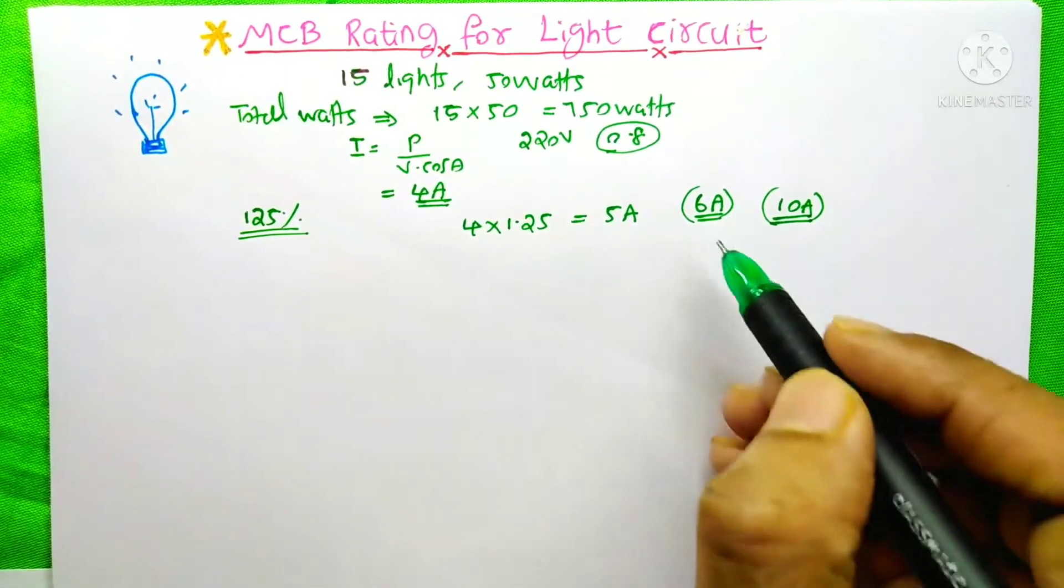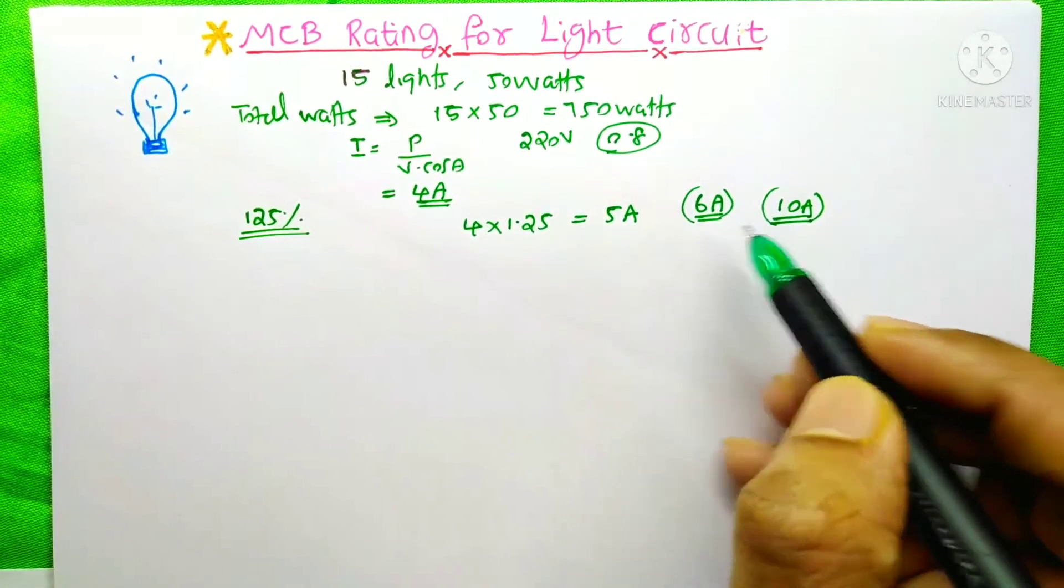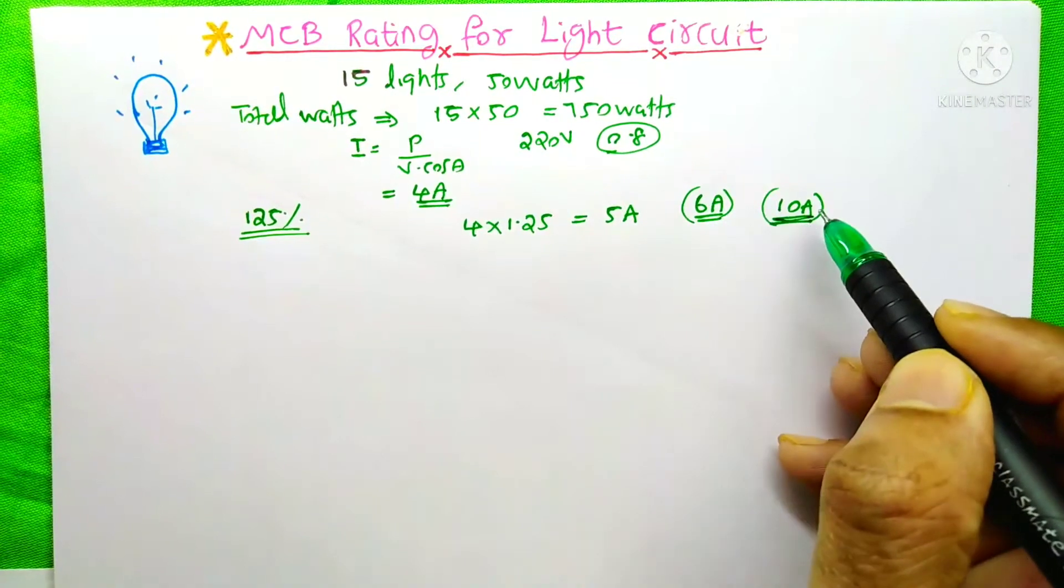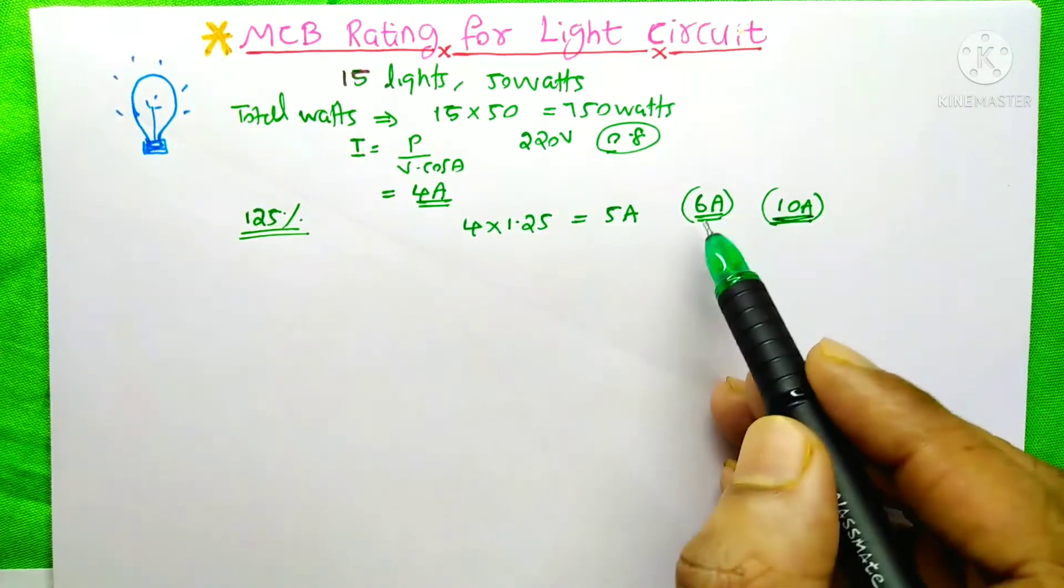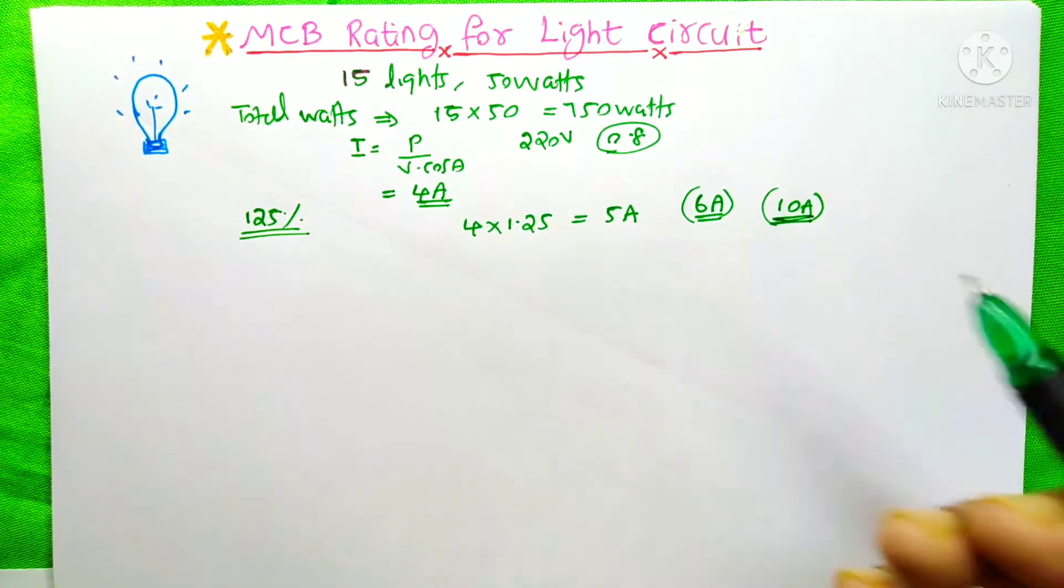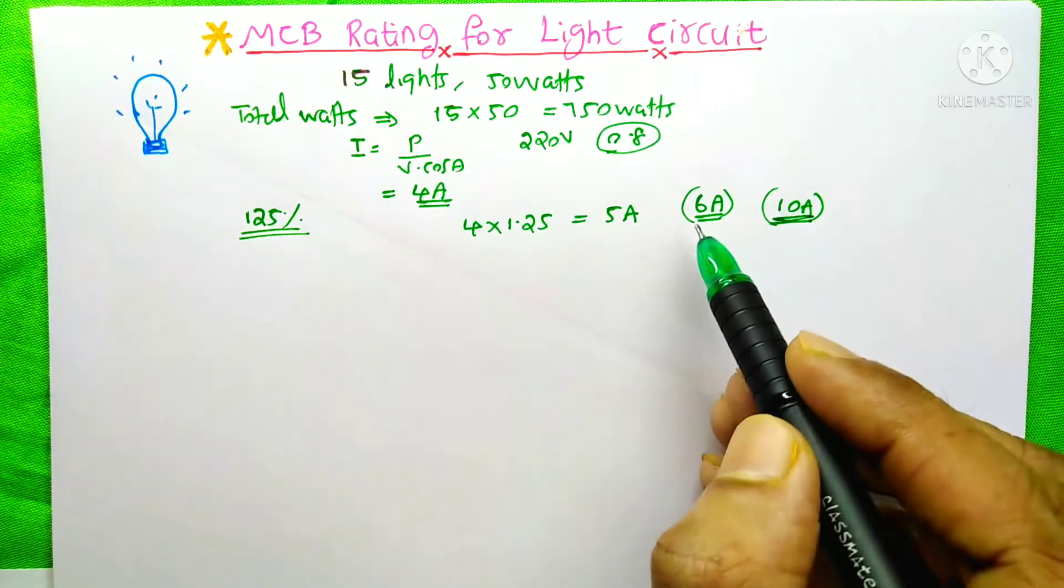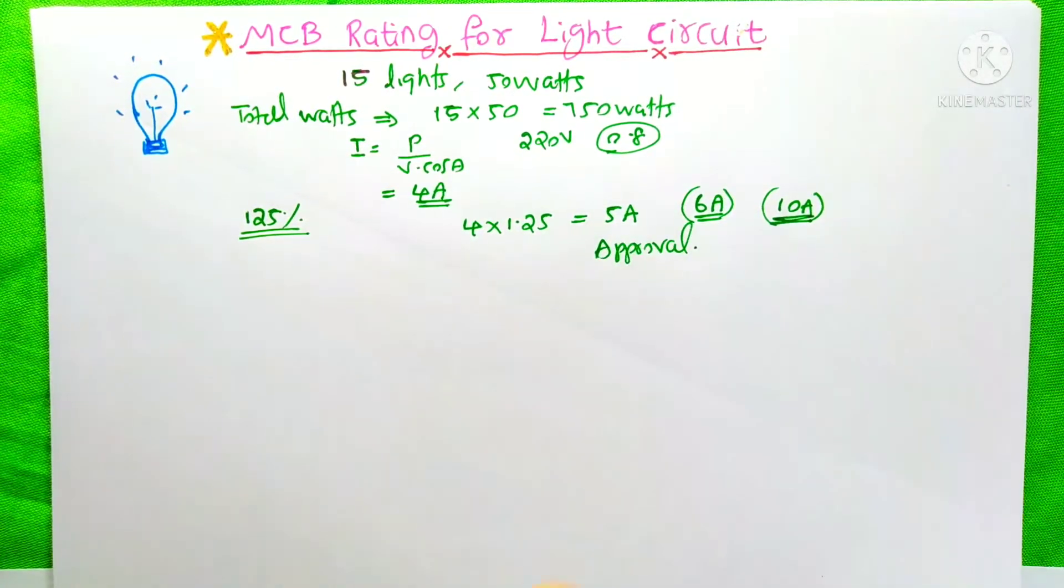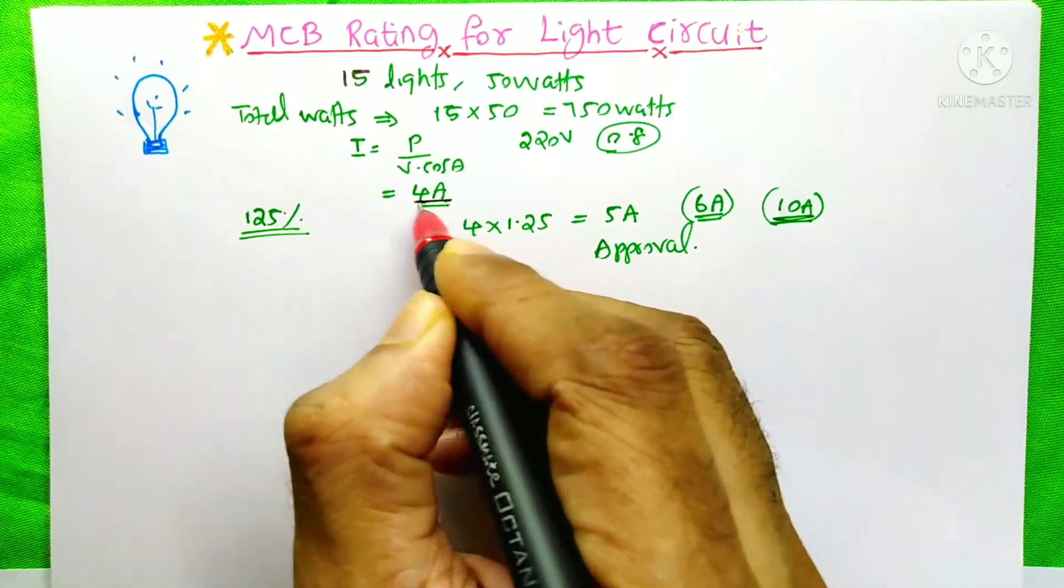Suppose in our case, your calculation is 6A and your country standard is 10A. If you put the 6A MCB on your document, the government will not give approval for you. Suppose your calculated current is 6A.